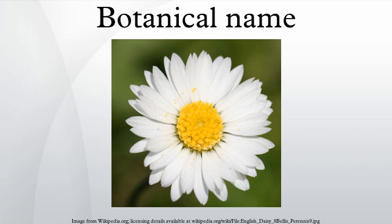Later it has been introduced worldwide, bringing it into contact with more languages. English names for this plant species include daisy, English daisy, and lawn daisy. The cultivar Bellis perennis 'Aucubifolia' is a golden variegated horticultural selection of this species.